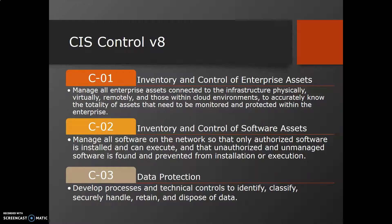The first control is Inventory and Control of Enterprise Assets. It talks about managing all enterprise assets connected to the infrastructure — physically, virtually, remotely, and those within cloud environments — to actually know the totality of assets that need to be monitored and protected within an enterprise. We should have an inventory of all assets inside an organization, including end-user devices such as laptops and desktops.